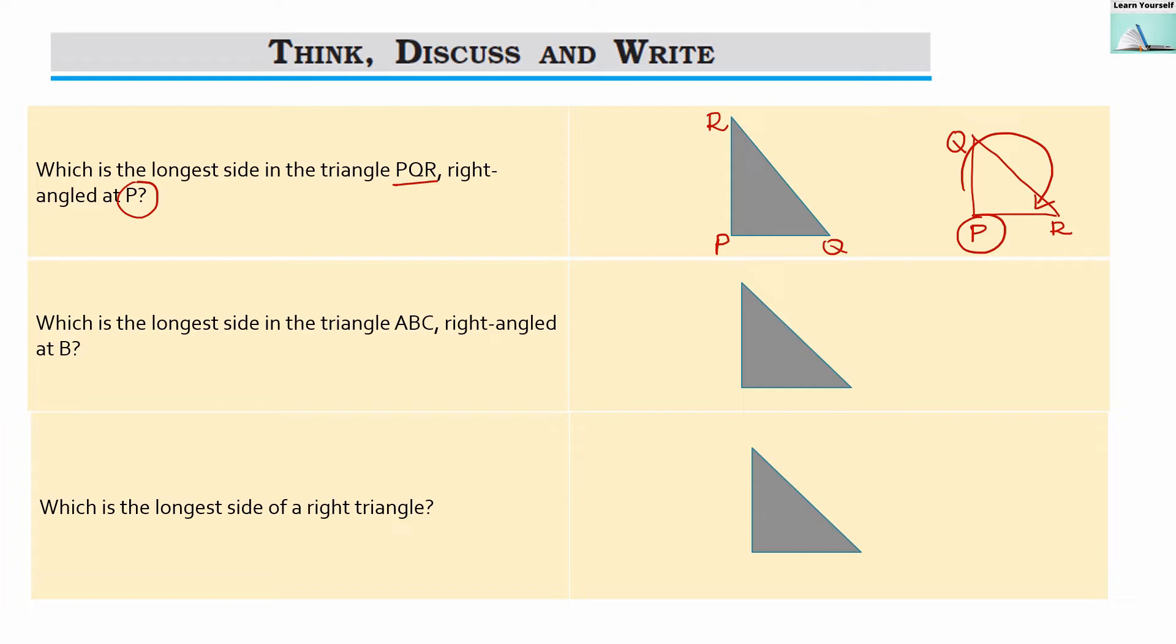Now next, which is the longest side in triangle PQR? So whenever the triangle is right angled triangle, the hypotenuse side will be the longest side for that triangle.